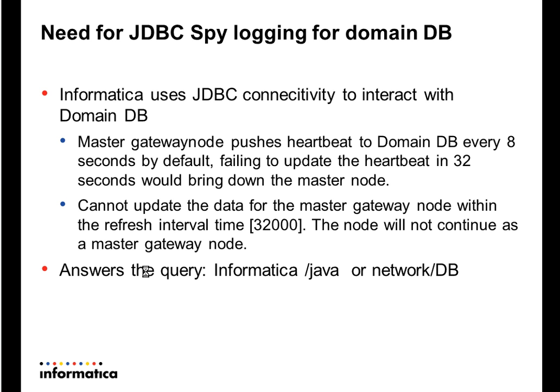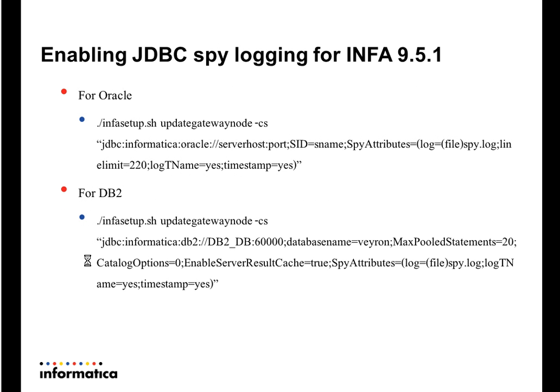So how do you enable JDBC spy logging? JDBC spy logging for Oracle — or for any other database — requires you to use the 'infasetup.sh updateGatewayNode' command and specify the spy attributes in the connection string; everything else remains the same. The spy attributes are specified within parentheses. You specify 'log' where you provide the file name, and you can also specify the location of the spy log if you want to customize it. There is also 'line limit,' which sets the number of characters reported in a single line; anything beyond that is truncated.